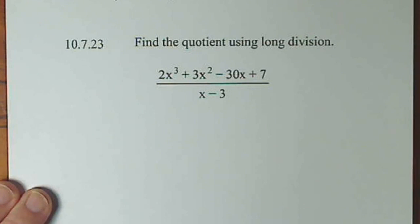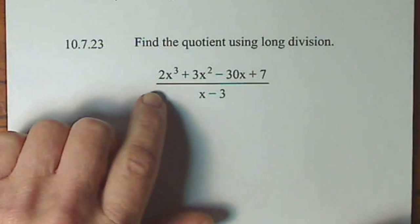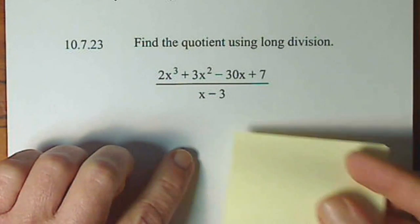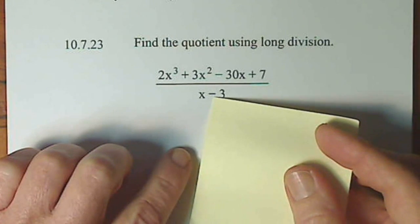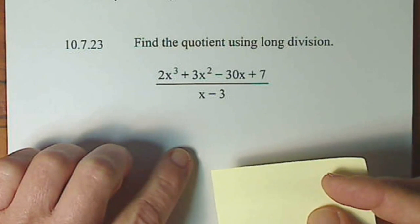We're asked to find the quotient using long division, and I want to stress the point that you have to use long division here because you have a binomial in the denominator, or you can think, I have something being added or subtracted in the denominator.